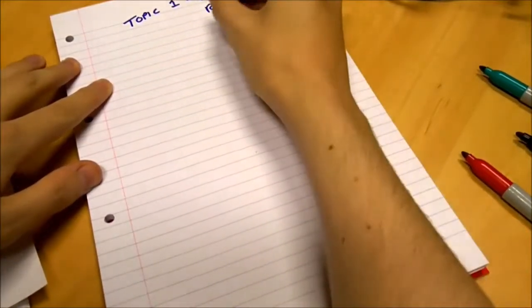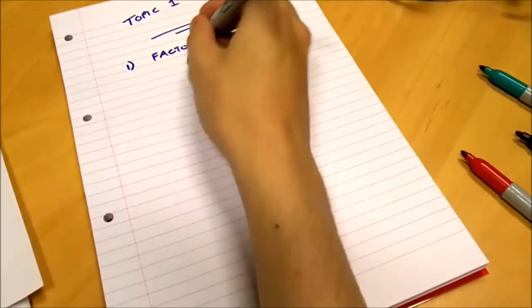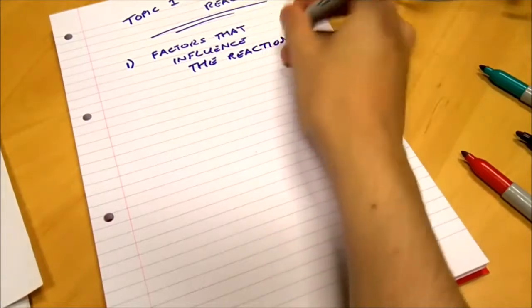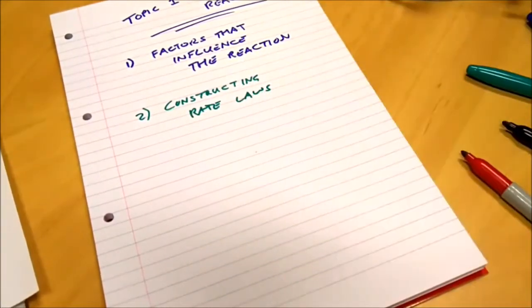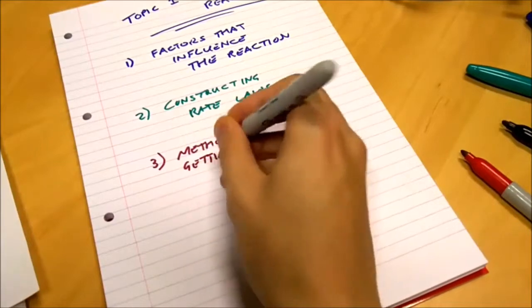Our first topic covers rates of reaction. Without doubt, this is the central idea in chemical kinetics. There are three main aims of this topic, or three things that you should be able to do by the end of this segment of the lecture series.